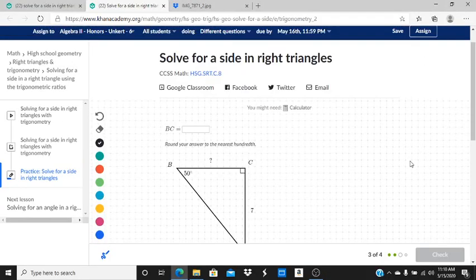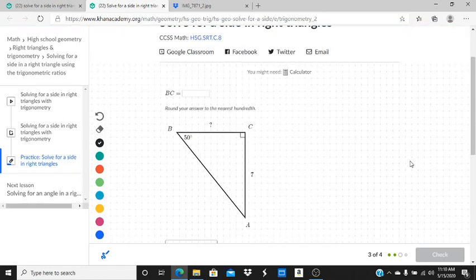Hi, Mr. Unkart here, and in this video I'm looking at another problem from solve for a side in right triangles. This assignment is on Khan Academy, and we're going to use some trig functions, either sine, cosine, or tangent, to solve this problem.